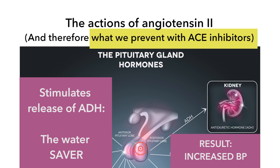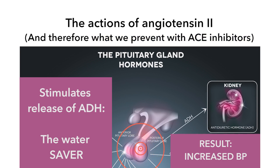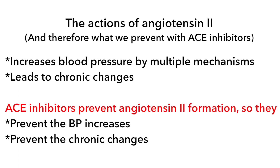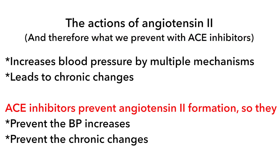Angiotensin II also stimulates the pituitary to release ADH, which is the water saver, and ADH goes down to the kidneys and saves more water. So as you can see, by at least five different mechanisms, angiotensin II is going to increase blood pressure, and ACE inhibitors will decrease a lot — not all — but a lot of the production of angiotensin II.